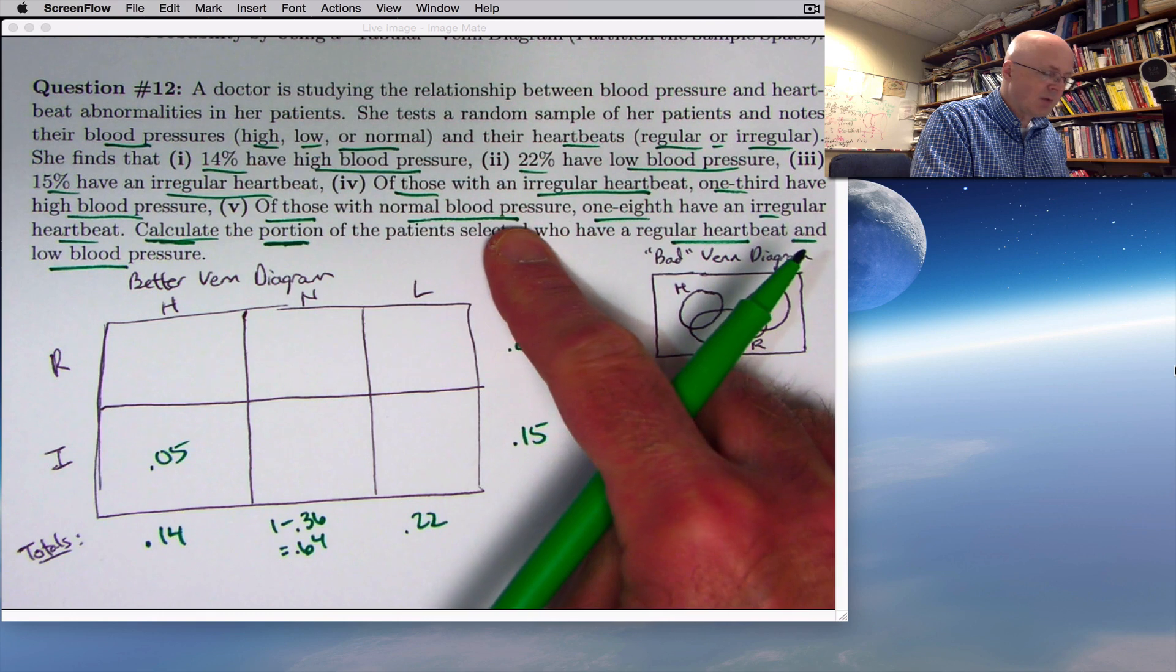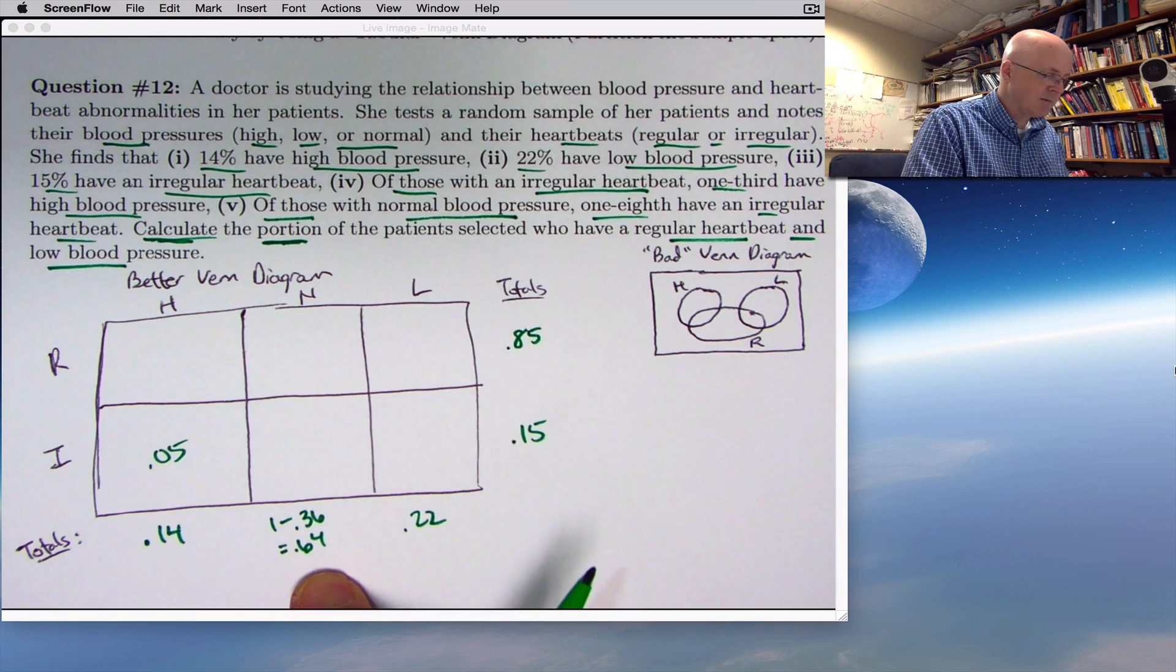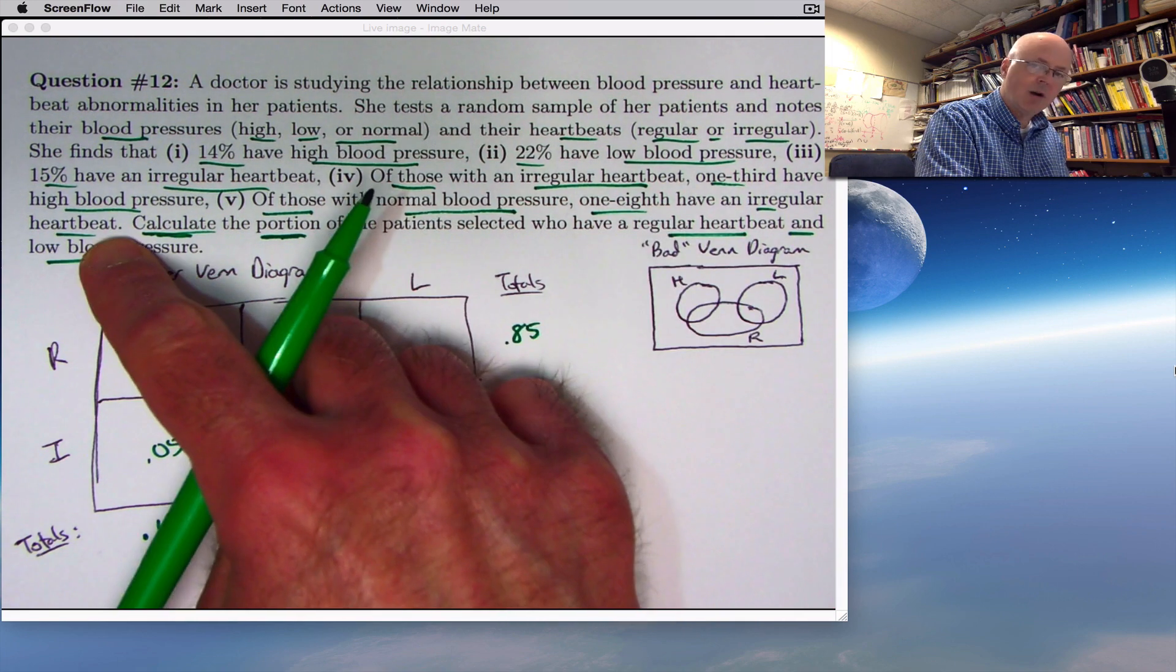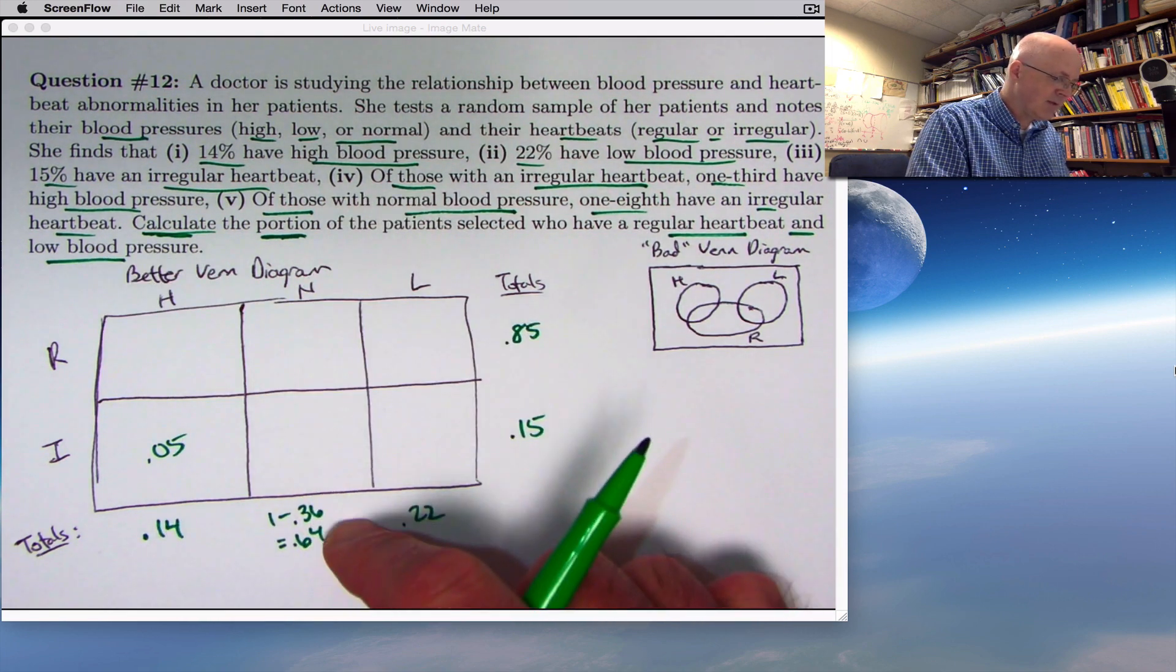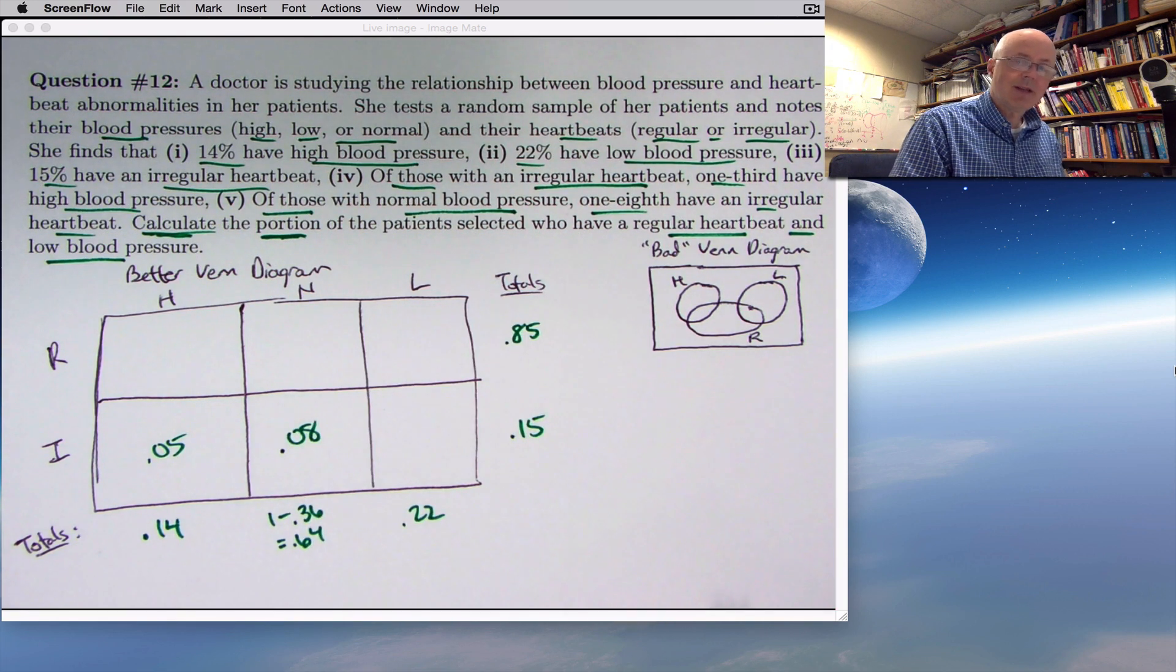Of those with normal blood pressure, in this column, representing 64% of the people overall, 1 eighth have an irregular heartbeat. 1 eighth of 64 is 8. Put a 0.08 right here. That's what we can quickly figure out with the given information.